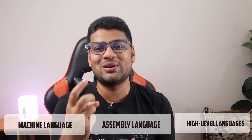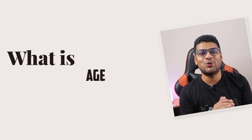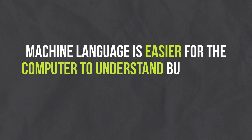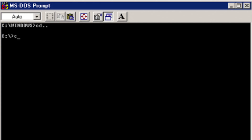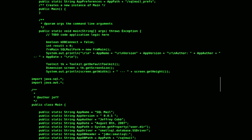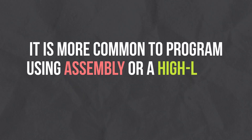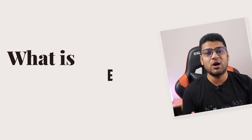What is machine language? Machine language is easier for computers to understand but harder for programmers to understand, because machine language is simply the language for machines. Sometimes programmers develop programs directly with machine code, but because this is difficult to understand and tedious to type, it is more common to program using assembly or a high-level language.